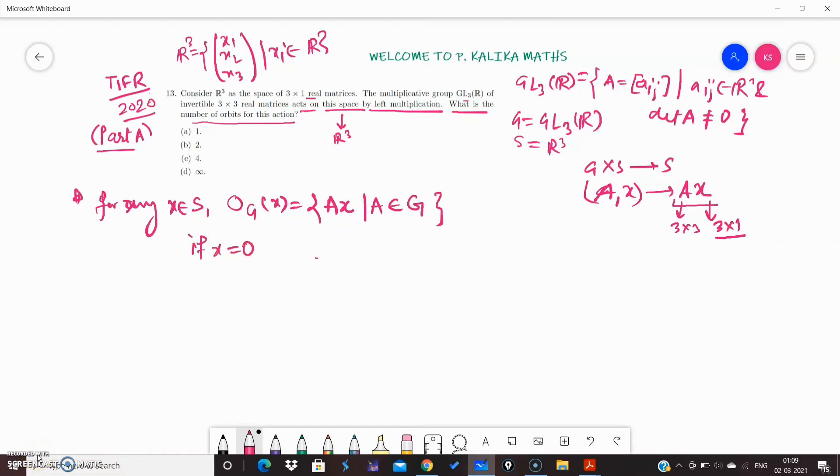If X equals 0, this is a zero vector, then what will the orbit of X be? You will easily see that this will be a zero vector again.